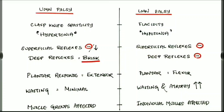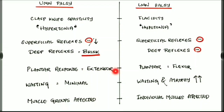In LMN palsy, both the superficial and the deep reflexes are lost. Regarding the plantar response in UMN palsy, there is an extensor response. In LMN palsy the plantar reflex is flexor. This positive plantar reflex is Babinski sign. Regarding wasting of muscles, there is minimal wasting in UMN palsy whereas wasting and atrophy is severe in LMN palsy. In UMN palsy muscle groups are affected whereas in LMN palsy individual muscles are affected.